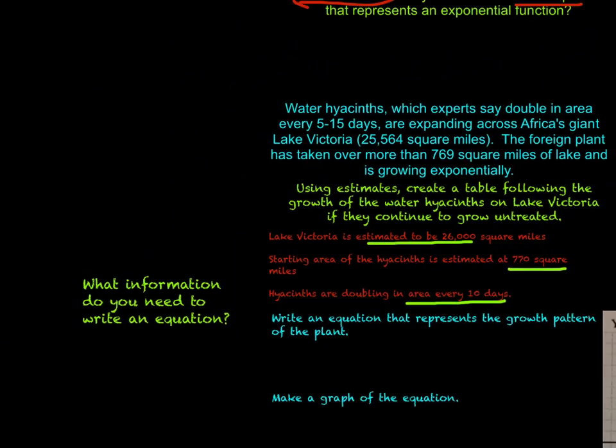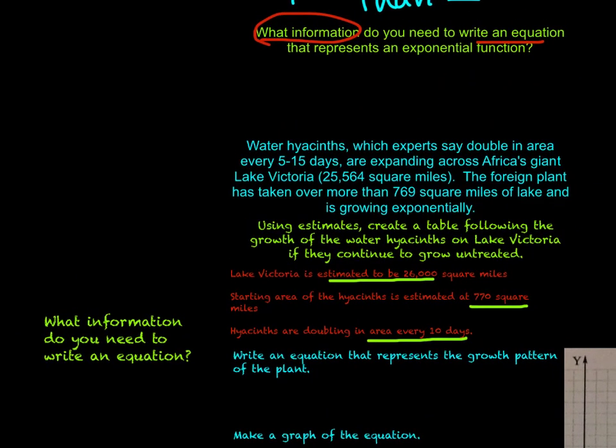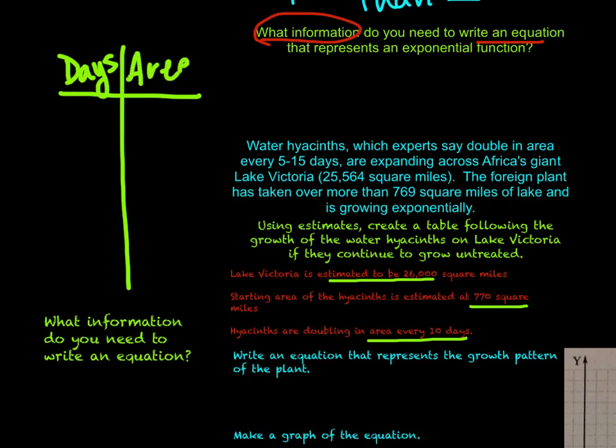So what information do we need to be able to write an equation? What's helpful for me when I think about this sort of information is to make a table. So we have days, and I'm going to look at my days as groups of 10. So I'll say 1, but that represents 10 days. If I say 2, that represents 10 more days have passed, so 20 days, and so on. And then we're looking at area. So to start out with, we have zero days have gone by, and we're already at 770 square miles that have been covered.